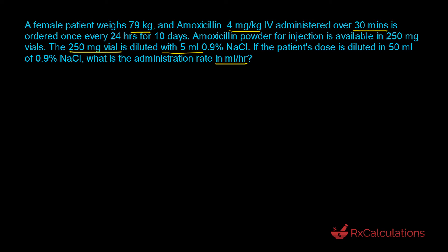First, let's find out how much amoxicillin this patient actually gets. We start with the normalized dose of 4 milligrams per kilogram, and the patient weighs 79 kilograms. The kilograms cancel out, giving us 316 milligrams. So this patient would receive 316 milligrams of amoxicillin.